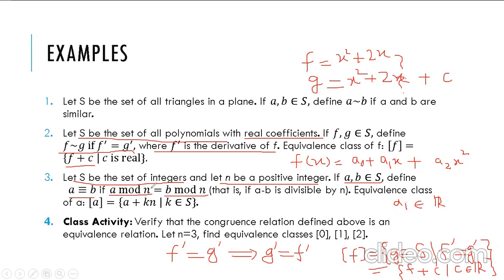This is the congruence class from set theory and number theory. We proved there that this is an equivalence relation, but let's prove it again. It's easy to verify the three properties.